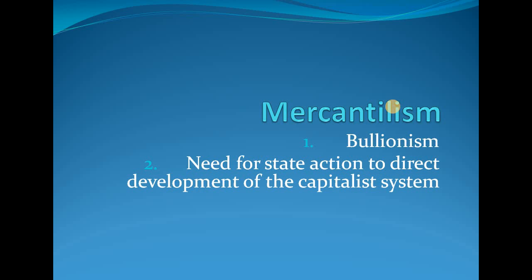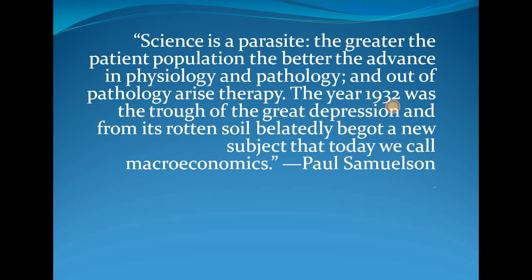To extract maximum benefit, the state had to intervene — this is the second tenet of mercantilism: the need for state action to direct the development of the capitalist system, so as to keep the benefits of trade directed toward its own people. This is what Great Britain practiced, intervening actively and rigorously wherever their people went — be it in India, North America, South America, or Africa.